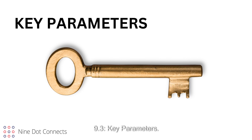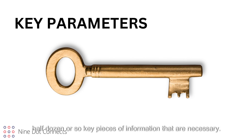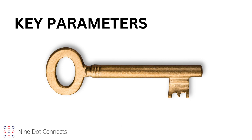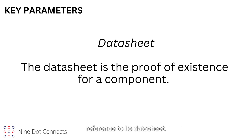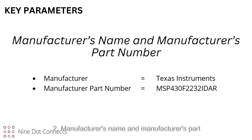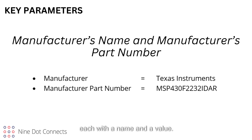9.3 Key Parameters. A question that may have come to mind is: what information do I need? There is only a half dozen or so key pieces of information that are necessary. 1. Datasheet — the datasheet is the proof of existence for a component; the component should have a link or reference to its datasheet. 2. Manufacturer's name and manufacturer's part number — the manufacturer's name and part number are vital intelligent data parameters. Though the name and part number go together, they are represented as separate parameters, each with a name and a value.